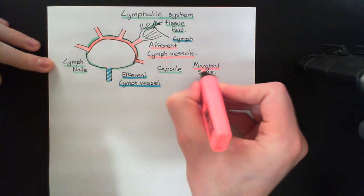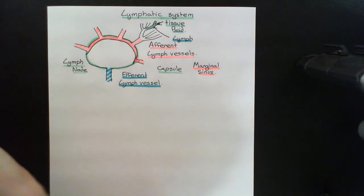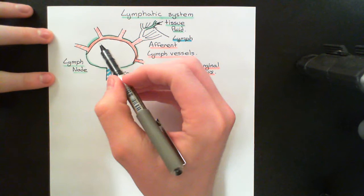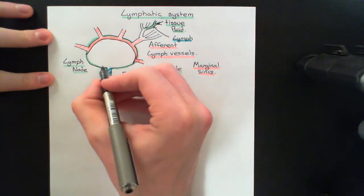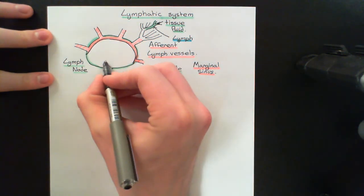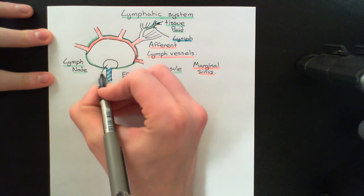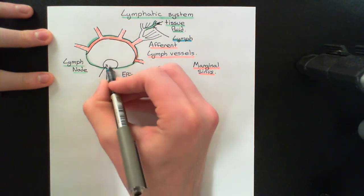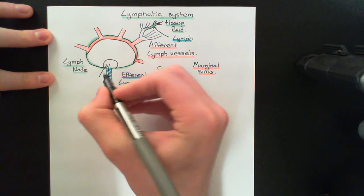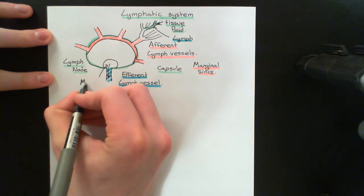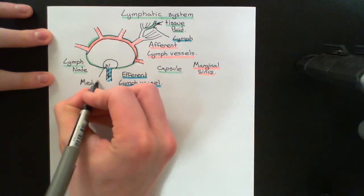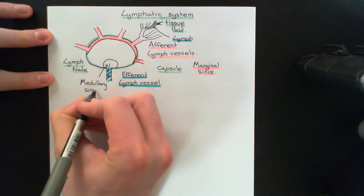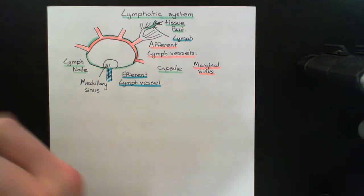Underneath the marginal sinus is where all of the lymphocytes are going to be sitting. Right at the centre of the lymph node is going to be another sinus, which is where the lymph that is going to drain into the efferent lymph vessel is going to accumulate, and this is called the medullary sinus. Medulla means the centre, so medullary sinus at the centre of the lymph node makes complete sense.